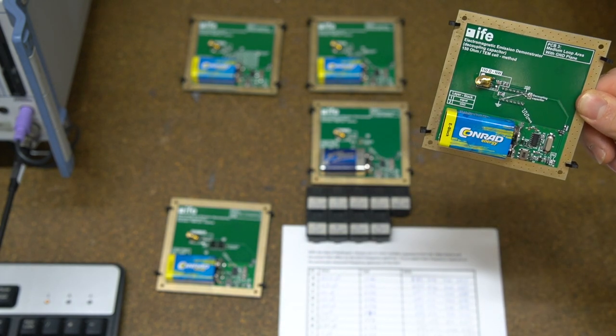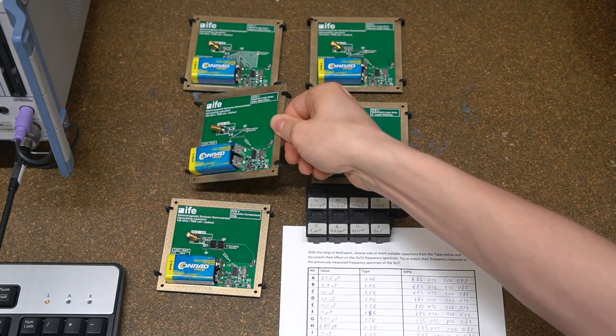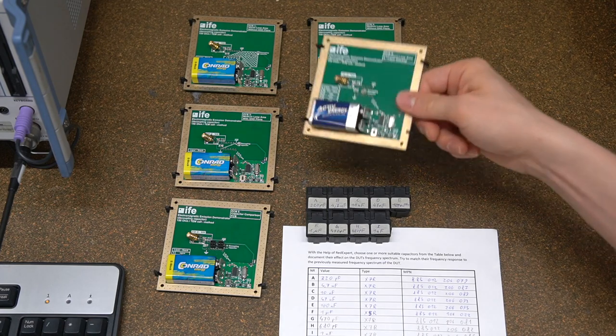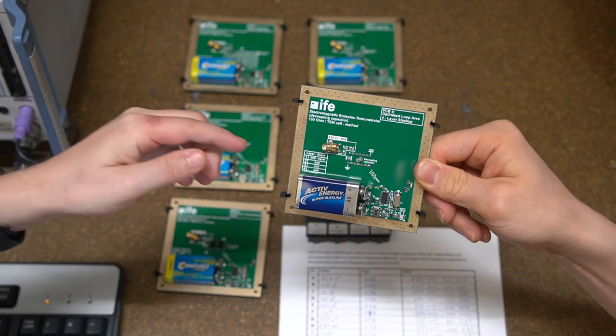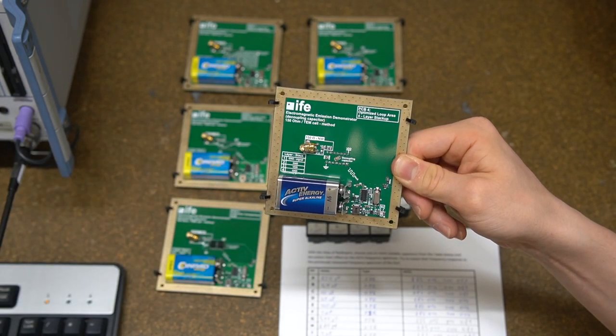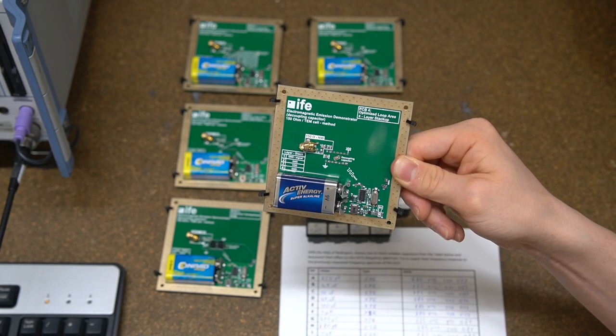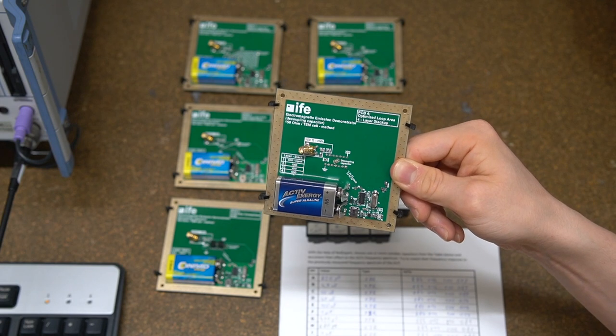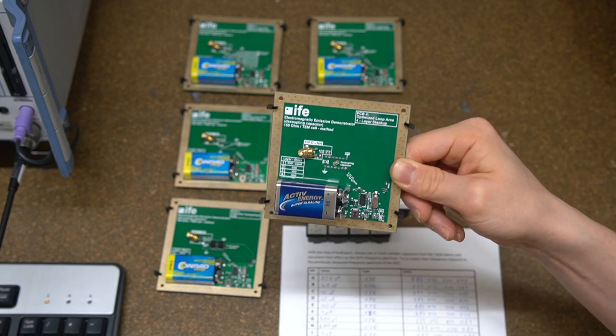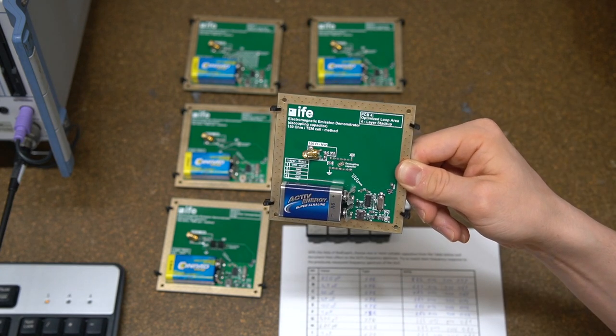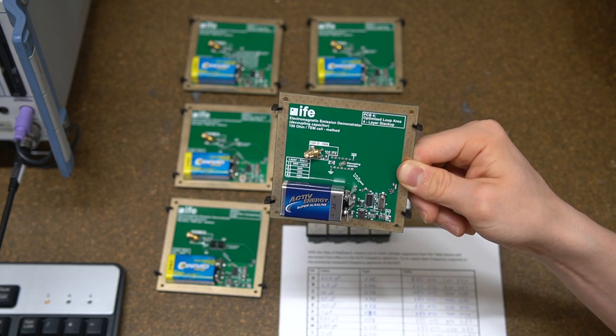And the next biggest improvement would be using a four layer PCB which is PCB four. With PCB four we are increasing our layer stacks to four. This is also additionally amplified by the open loop area being reduced as well. So this is in theory our best performing PCB and this will define a quote-on-quote final solution for this problem.